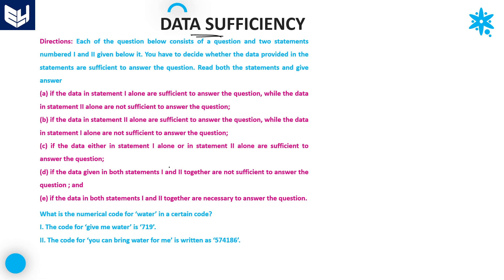Let's continue the last session. The first question is: what is the numerical code for water in a certain code language? Looking at statement 1 alone: the code for 'give me water' is 719. You will not get the code word for water by using only statement 1 alone, so it is not possible.